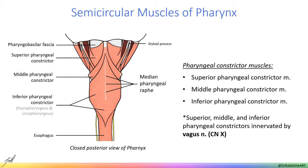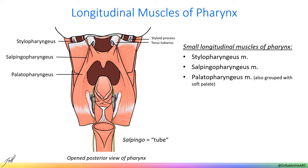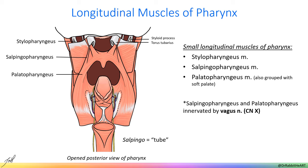We will now open up the pharynx to look at the small longitudinal muscles including stylopharyngeus, which starts at the styloid process and then slips between the superior and middle pharyngeal constrictor muscles. Salpingopharyngeus extends from the torus tubarius to the palate while palatopharyngeus forms an arch in the back of the oral cavity. Note that sometimes palatopharyngeus is grouped with muscles of the soft palate. Collectively these muscles function to elevate the larynx and shorten the pharynx during speaking or swallowing. All muscles of the pharynx are innervated by the vagus nerve, cranial nerve 10, except stylopharyngeus which is innervated by the glossopharyngeal nerve, or cranial nerve 9.